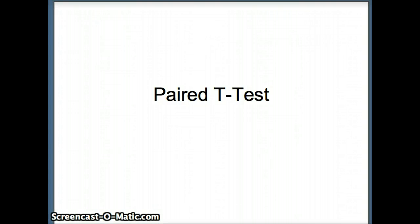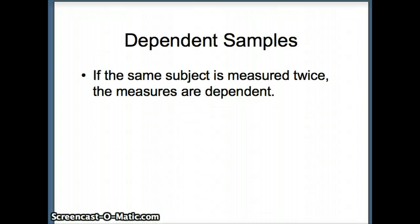This presentation examines the paired t-test that we use for dependent samples. If we have the same subject measured twice, then we're looking at dependence. Why is that? If you have a pre-test and a post-test, if a student does very well on the pre-test, chances are that student will do very well on the post-test. So we can predict the likelihood of the second event because we know something about the first event. In that case, we conclude that those are dependent.